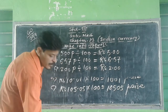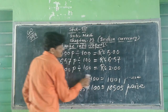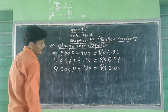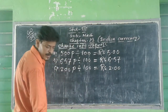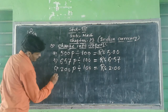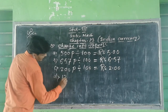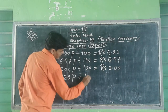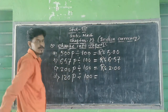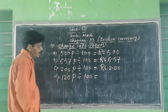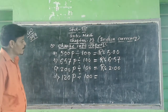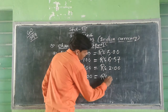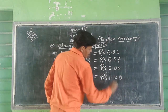Question Number 3d: 120 paise divide by 100 equal to Rupees 1.20.